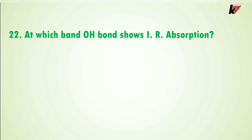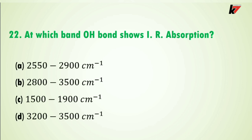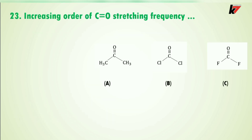Question 22: at which band does the O-H bond show IR absorption? Here are four options and the correct answer is option D: the O-H bond shows IR absorption at 3200 to 3500 cm⁻¹. If any compound has an OH group present, it will give an IR absorption in this range of 3200 to 3500 cm⁻¹.